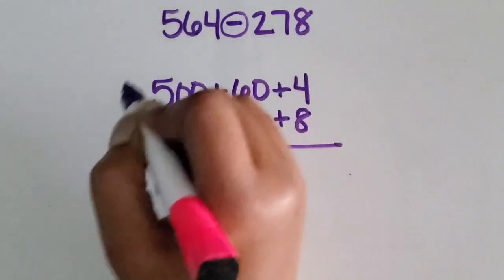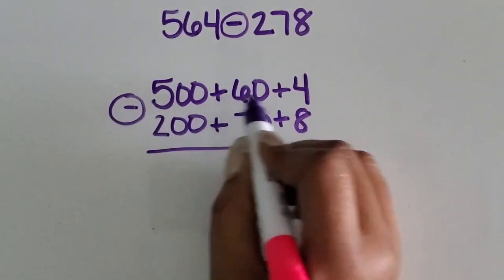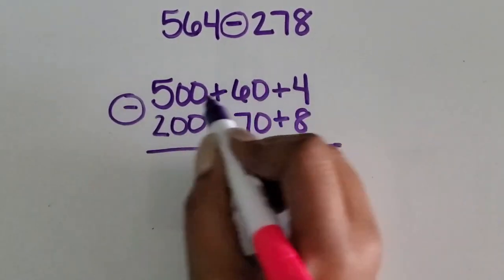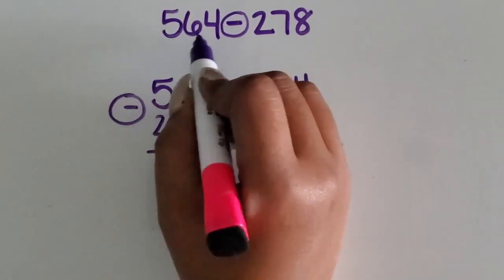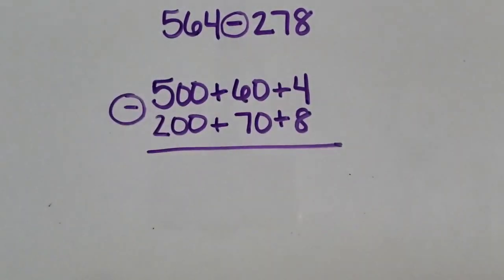Our operation is subtraction. Again, the plus signs are just showing us that the hundreds, tens, and ones, when put together, make this number here, the three-digit number here.